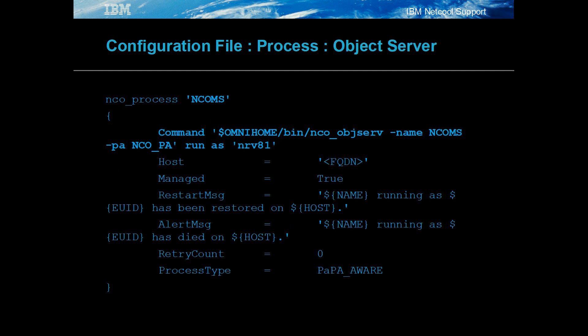The process definition statements hold a process name and the command to run to start the process, along with other properties such as host and retry count. In this example, the object server is run as the Netcall user NRV81.